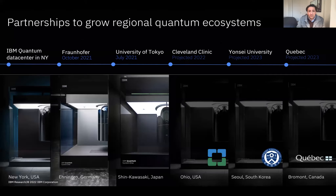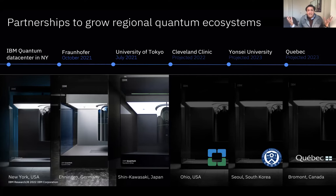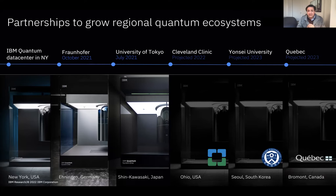Over 175 institutions — from universities to large companies to start-ups to research laboratories — have joined the IBM quantum network to collaborate and develop intellectual property, skills, curriculum, and explore use cases including materials simulation and a novel field called quantum machine learning, which sits at the intersection of AI, quantum, and optimization problems.